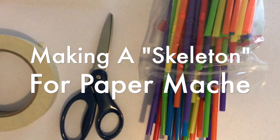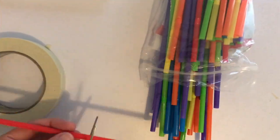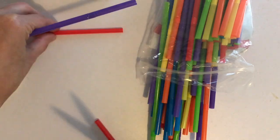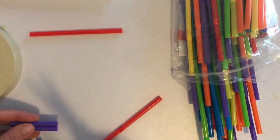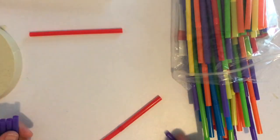In this demo I'm going to show you how to make your skeleton for your paper mache animal. So I'm cutting up plastic straws. I'm using different colors just so you can see how many I'm using.